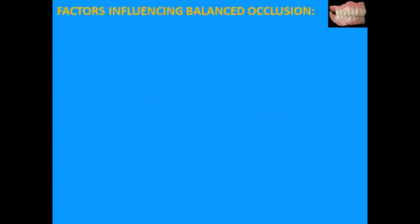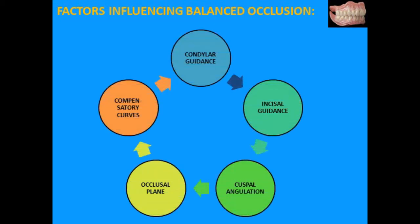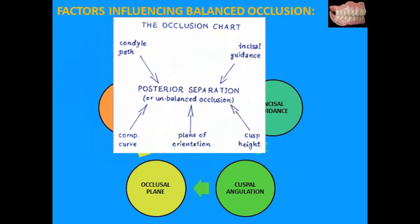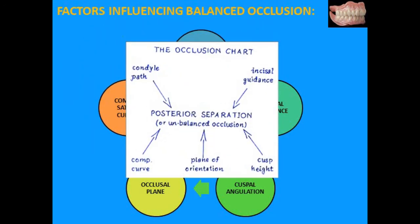The factors influencing balanced occlusion are: condylar guidance, incisal guidance, cusp angulation, occlusal plane, and compensatory curves. From the Hanau/Lot occlusion chart, condylar and incisal guidance have a similar effect — they increase posterior tooth separation — whereas the other three factors decrease posterior tooth separation. The effect of incisal and condylar guidance must therefore be counteracted by the other three factors in order to obtain a balanced occlusion.